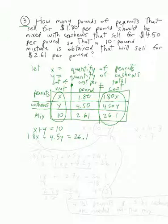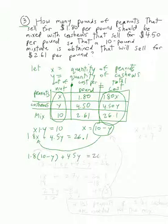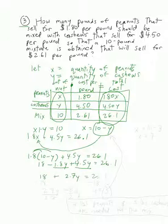I'll use substitution again. Solving the first equation for x gives x equals 10 minus y. Substituting into the second: 1.8 times (10 minus y) plus 4.5y equals 26.1. Distributing: 18 minus 1.8y plus 4.5y equals 26.1. Combining like terms: 2.7y plus 18 equals 26.1. Subtracting 18 gives 2.7y equals 8.1. Dividing by 2.7 gives y equals 3.